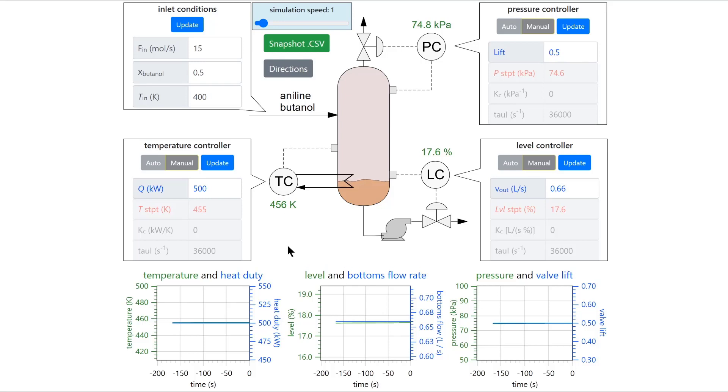To perform a step change input first let the process achieve steady state conditions. You can do this by waiting until the plots show stability or simply by refreshing the page because the default values in this simulation are already at steady state.